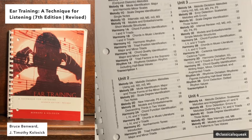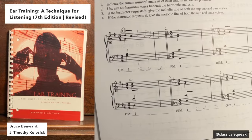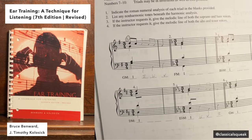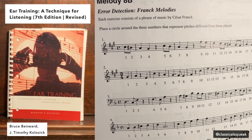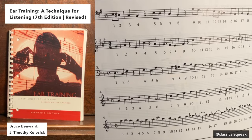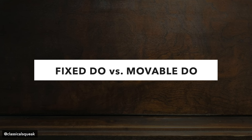There was also Ear Training: A Technique for Listening, 7th edition revised, which we had homeworks to go to the library and listen to CDs that had exercises to complete. For sight singing, we were in smaller groups. We used Music for Sight Singing, 8th edition. Unfortunately for me, if you were taking this course in English, they used movable doe. I have perfect pitch, so fixed doe is significantly easier.